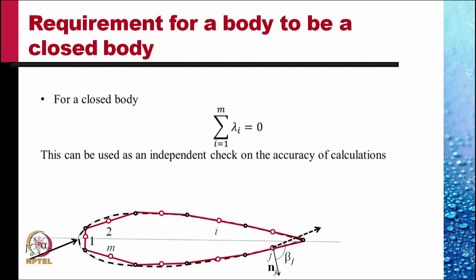Now, as was said earlier, the net source strength for a closed body must be zero. So summation of lambda i over i from 1 to m should be zero. We have not used this equation earlier. So this can be used as an independent check of the accuracy of the calculations performed.